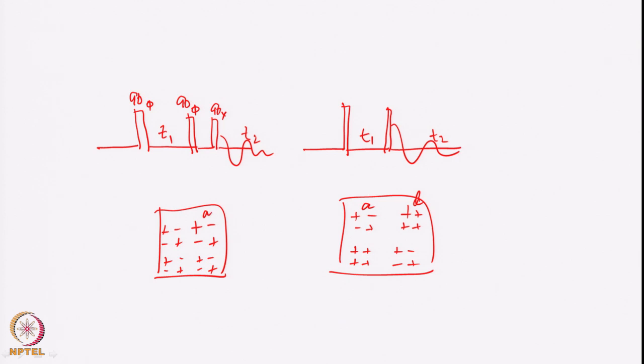In DQF-COSY, we had all absorptive line shapes for both the diagonal and the cross peaks, whereas COSY had dispersive line shapes on the diagonal. This represented a big improvement in spectral resolution, which was particularly advantageous from the point of view of improving the quality of the spectrum.